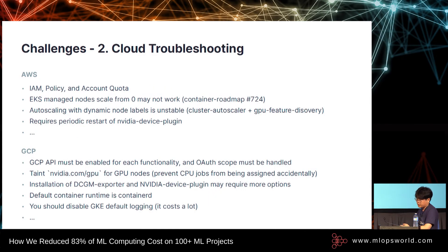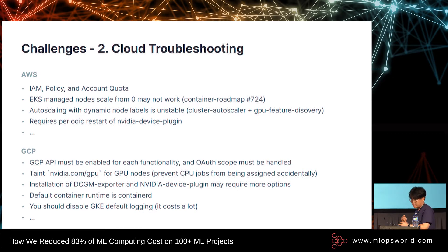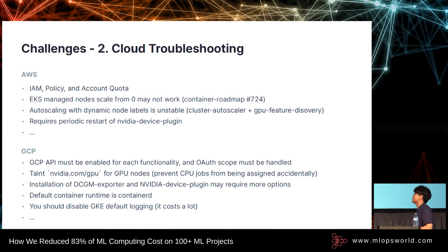The second biggest challenge was troubleshooting for each cloud provider. GPUs and Kubernetes are now very popular, but many features are still in testing or implemented by combining complex components like Kubernetes, cloud providers, NVIDIA drivers, and cluster autoscaler. For AWS, you have to set up IAM policies and quotas, the EKS managed node cannot scale from zero, autoscaling with dynamic node labels can be unstable, and AWS instances require a periodic restart of NVIDIA device plug-ins. For Google Cloud Platform, the API must be enabled for each function, you have to handle OAuth scopes, GCP GPU instances have taints like nvidia.com/gpu so you must add tolerations to your workload, installation of the DCGM exporter and NVIDIA device plug-in may require additional options, GCP has a different default container runtime (containerd vs Docker on AWS), and most importantly you should disable GKE default logging because it costs a lot.